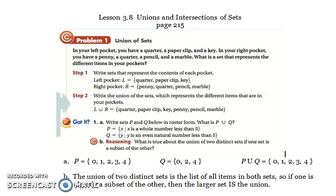So if we write the left pocket, remember the notation for sets is those squiggly little parentheses. So in your left pocket, you have a quarter, a paperclip, and a key. We're just going to list those. In the right pocket, we've got the set of the penny, the quarter, the pencil, and the marble.